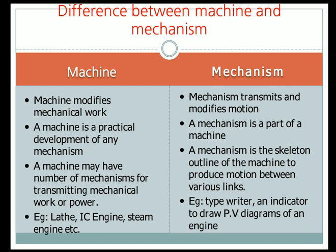The first difference: a machine modifies mechanical work. A machine is a combination of a large number of kinematic links and pairs, and it modifies mechanical work by transmitting it — instead of a human being, the machine itself does the work of the human being.